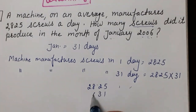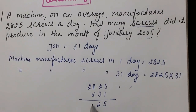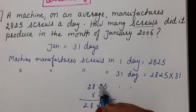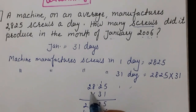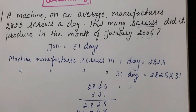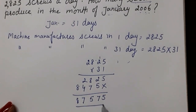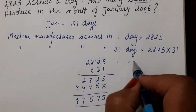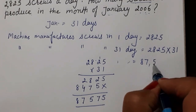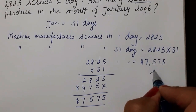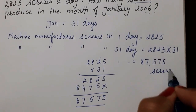Multiplying 2,825 by 31: first multiply by 1, giving 2,825 as it is; then multiply by 3 (i.e., 30), giving 84,750. Adding both results: 2,825 plus 84,750 equals 87,575. So the machine will produce 87,575 screws in January 2006.